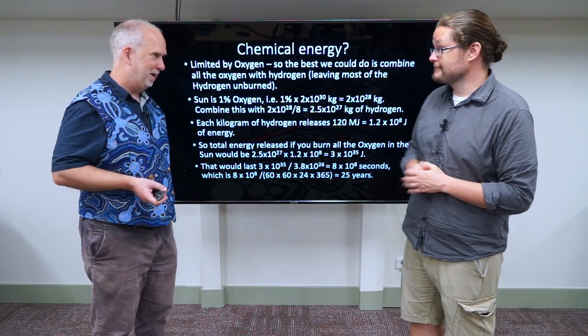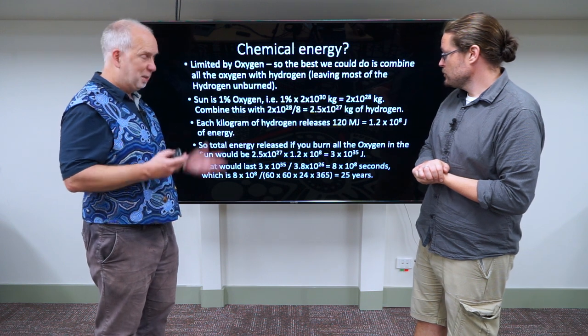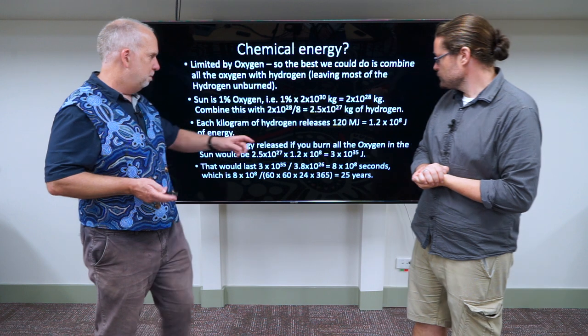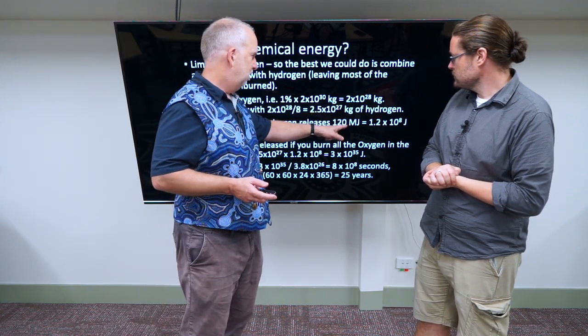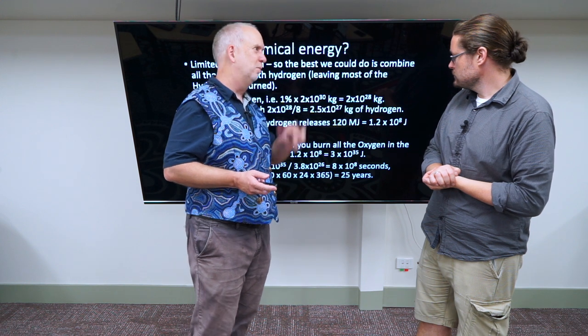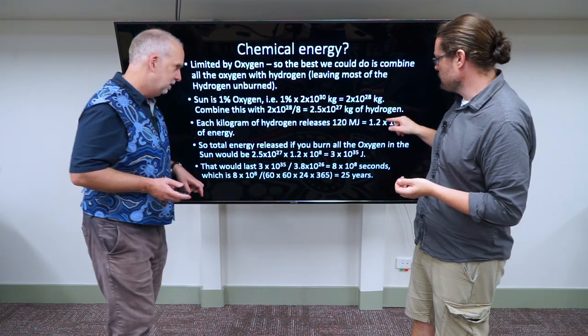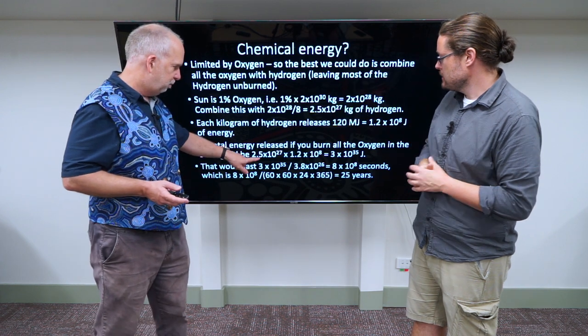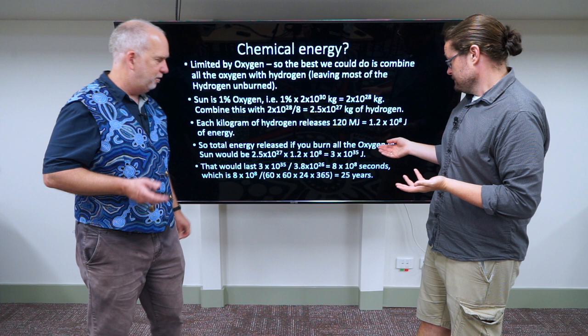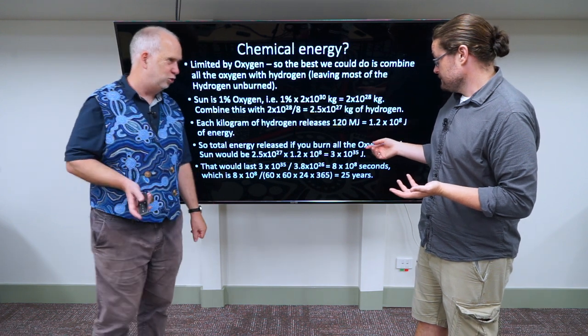Now we know that each kilogram of hydrogen releases 120 megajoules. That's a combustion energy that's very well known. Many rockets are powered by this. So it's actually about the best combustion energy you can get from anything. So you multiply that, so you get 1.2 by 10 to the 8 joules for every kilogram of hydrogen you combine with oxygen. And so now we multiply that by how much hydrogen we have. So multiply this by that, and you get 3 by 10 to the 35, 3 with 35 zeros after it, joules of energy.